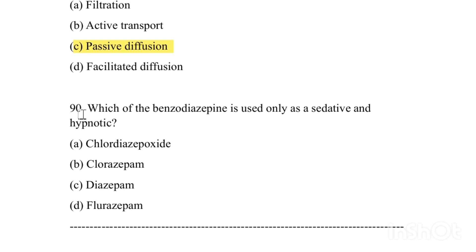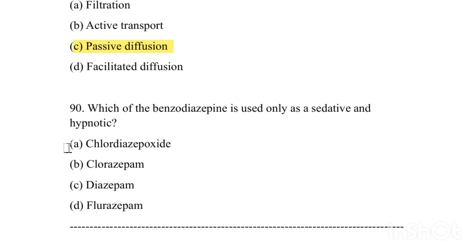Which benzodiazepine is used only as a sedative and hypnotic? Option A: Chlordiazepoxide. Option B: Chlorazepam. Option C: Diazepam. Option D: Flurazepam. Answer is Option A, Chlordiazepoxide.